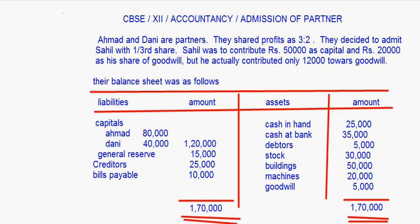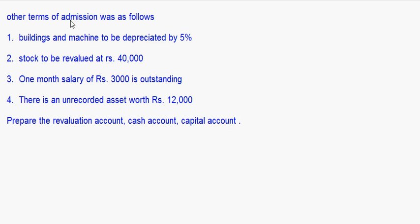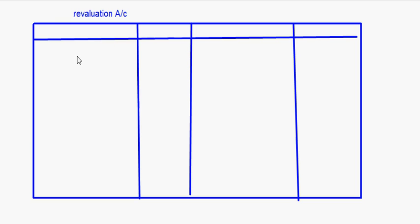The balance sheet is given with capitals of the partners, general reserve, creditors and bills payable on the liability side, and all assets including goodwill on the asset side. The terms of admission are: buildings and machine to be depreciated by 5%, stock to be revalued at rupees 40,000, one month salary of rupees 3,000 is outstanding, and there is an unrecorded asset worth rupees 12,000. We have to prepare the revaluation account, cash account, and capital accounts of the partners.